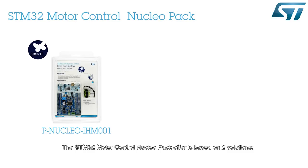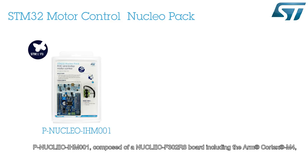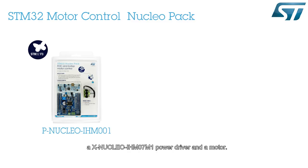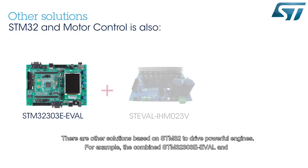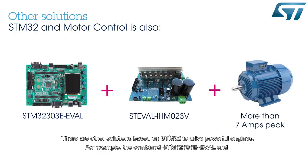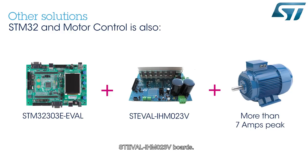The STM32 Motor Control Nucleopack offer is based on two solutions. The first is the PNucleo IHM001, composed of a Nucleo F302R8 board including the Arm Cortex M4, an X-Nucleo IHM07M1 power driver, and a motor. The second pack is a PNucleo IHM002, which is extended by a power supply. There are other solutions based on STM32 to drive powerful engines — for example, the combined STM32303E eval and ST eval IHM023V boards.